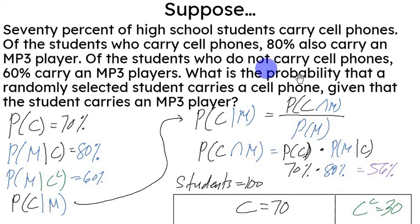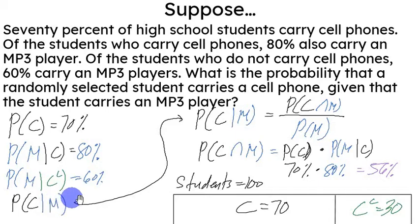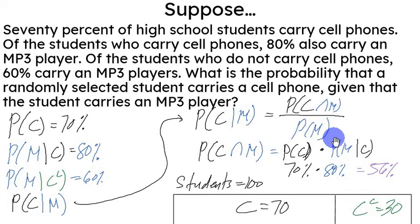In the last video, we were trying to figure out the probability that a randomly selected student carries a cell phone given that the student carries an mp3 player. We know the probability of any student carrying a cell phone, the probability of carrying an mp3 player given the student carries a phone, and the probability of carrying an mp3 player given the student does not carry a phone. Using the formula of conditional probability, we resolved the probability of a student carrying a cell phone given that the student carries an mp3 player, but we were unsure of the probability of a student carrying an mp3 player.